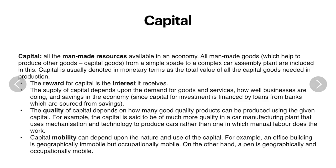The third factor is capital. Capital is the man-made resources available in an economy, such as the machineries used in a business. Capital also has another definition referring to money introduced in a business, but here we are talking about machineries and man-made goods which help produce other goods — these are called capital goods. The reward for capital is interest. The supply of capital depends on the demand for goods and services, how well the business is doing, and the savings in an economy, since capital for investment is financed by loans from banks which are sourced from savings. The quality of capital depends on how well it enables the production of quality products.